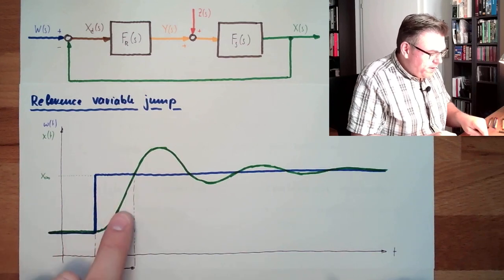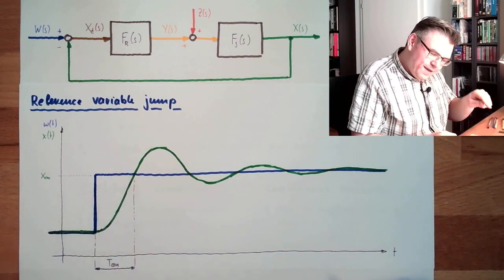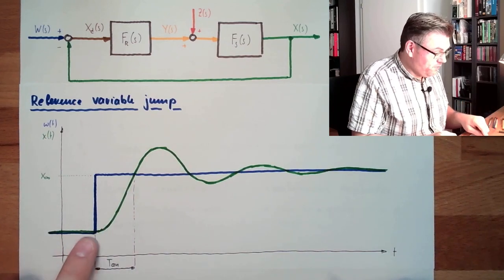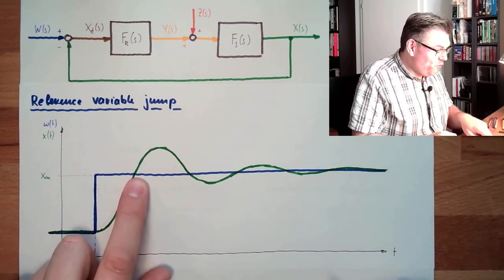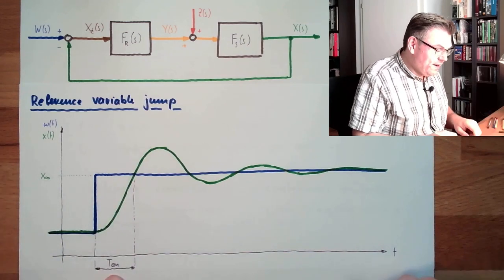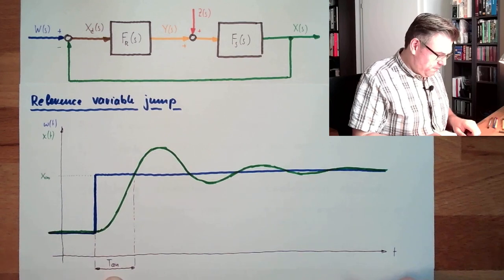Until the correcting, the controlled variable, too many variables, the controlled variable reaches the first time its steady end value. This is the Anregelzeit or rise time in English.